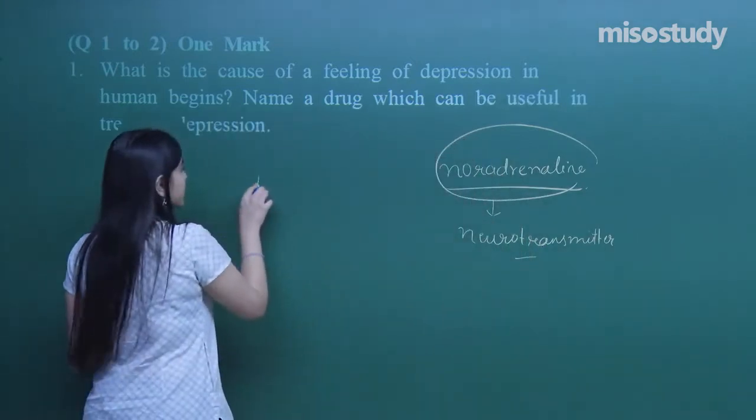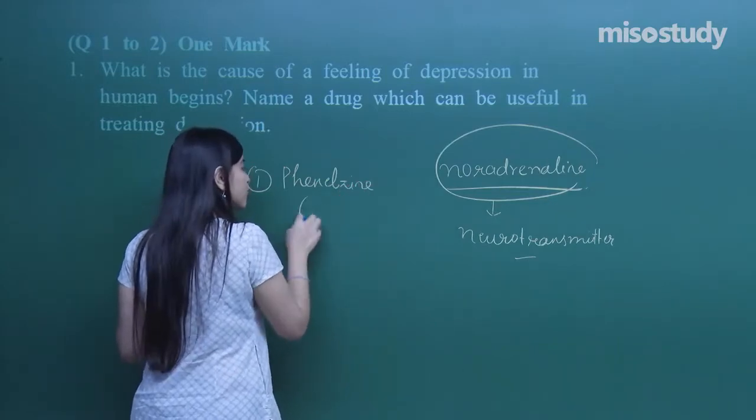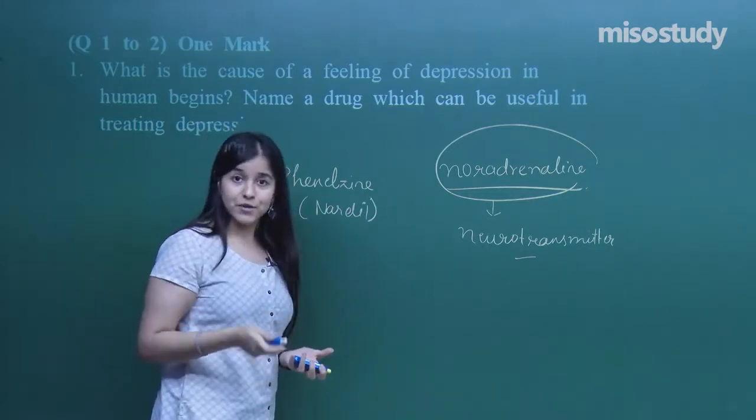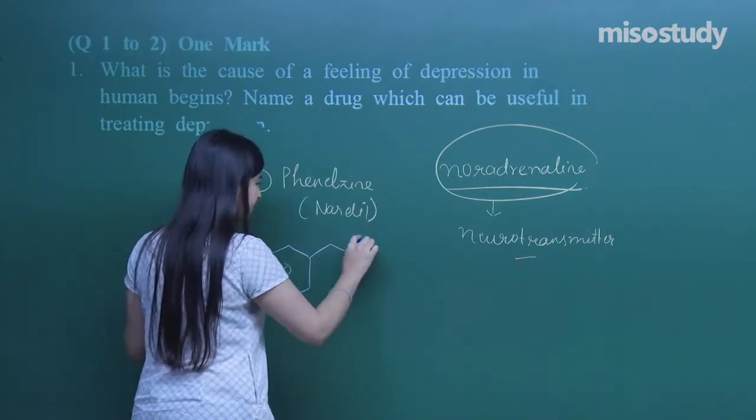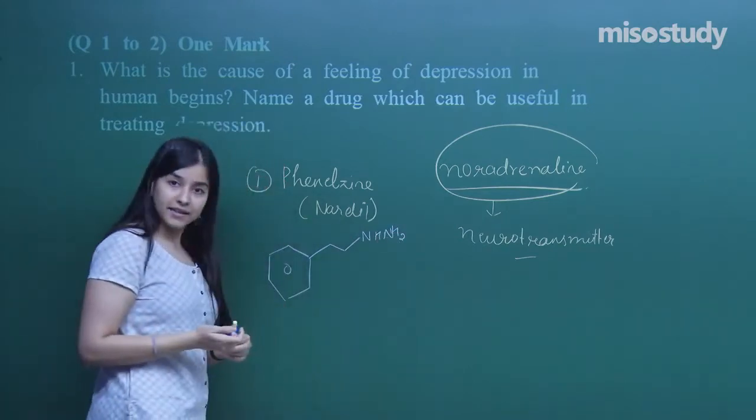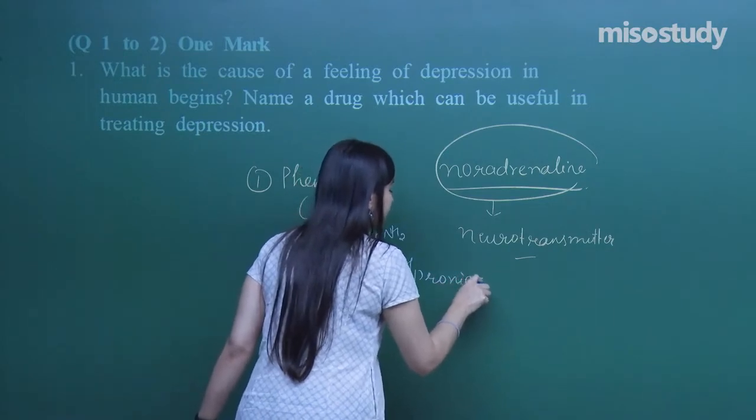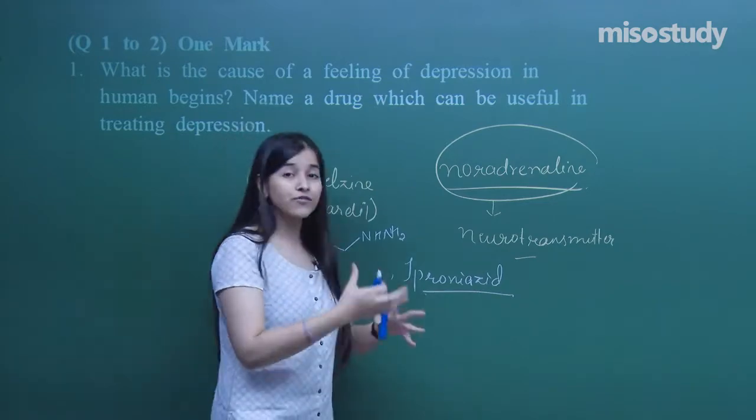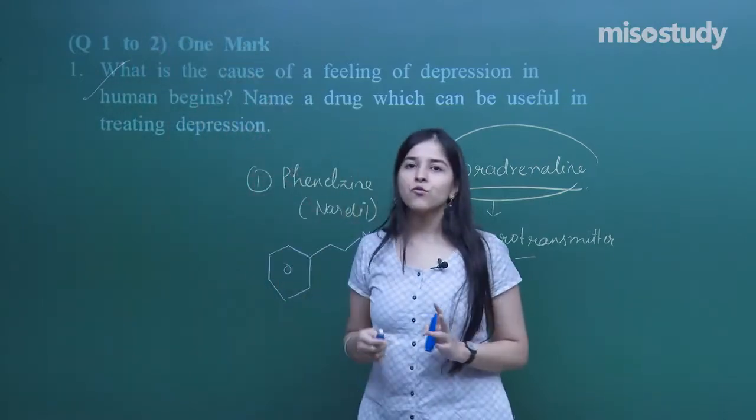Now which drug can be used in treating the depression? One of the drugs is phenylzine, also known as nardyl. It is basically an antidepressant drug. Another one is eproniazid. We have discussed a lot of antidepressants. You can name anyone.